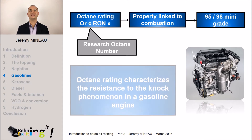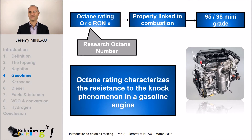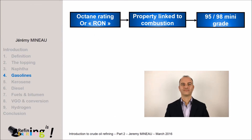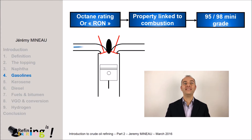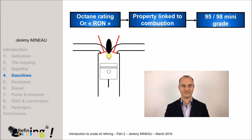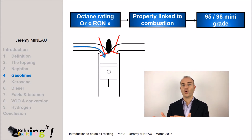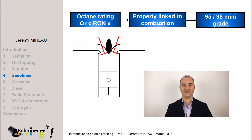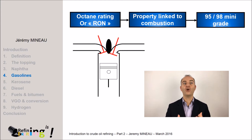The octane rating characterizes the resistance to the knock phenomenon in a gasoline engine. As a reminder, a gasoline engine is the place where the mixture of air plus gasoline burns thanks to a spark or a source of ignition. Imagine that a mixture of air plus gasoline enters the engine — with a source of ignition, the mixture burns and produces some energy. But it turns out that certain molecules may burn by themselves before the source of ignition takes place. Thus, in the engine, there are two sets of combustion: the first is due to some molecules auto-igniting, and the second occurs in the presence of the source of ignition. These two phenomena, not occurring at the same time, cause the phenomenon of knock, which is characterized by a very specific noise.